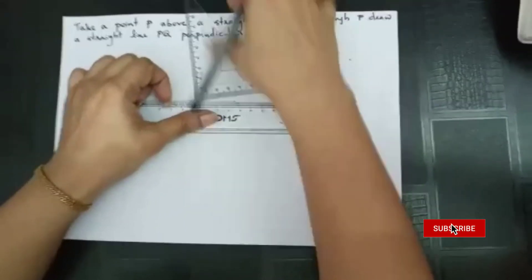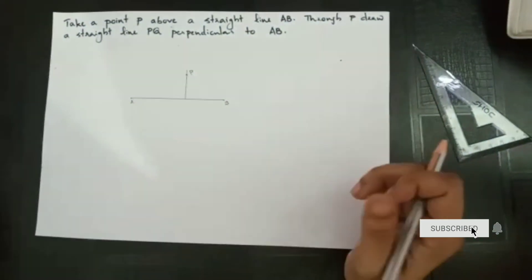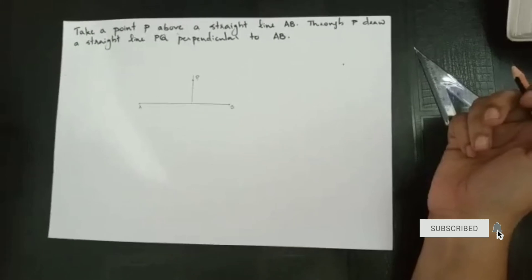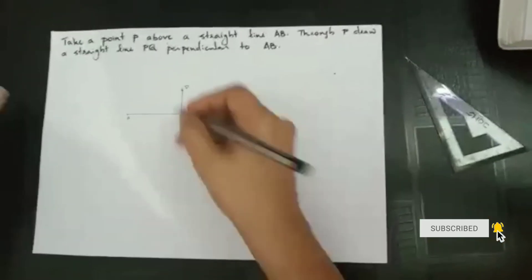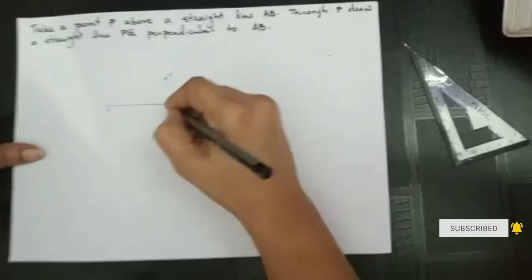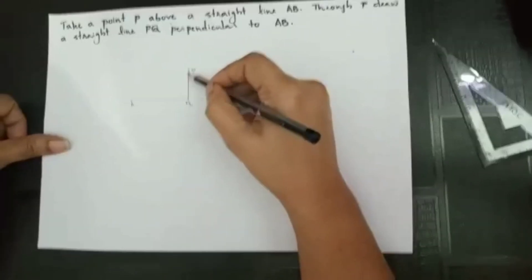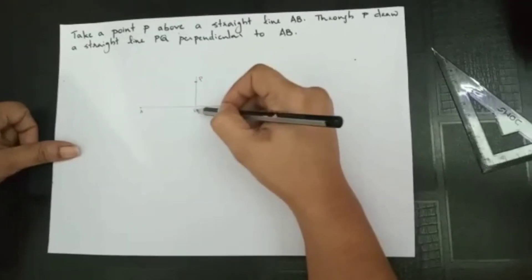Now you can remove the set square and see what you got. You got a perpendicular line PQ. This is a point P. And here I am just going to write Q. So this is a line segment. So this is PQ.